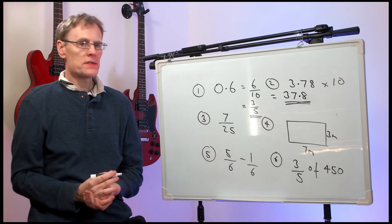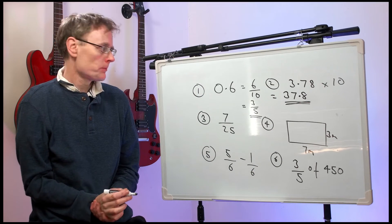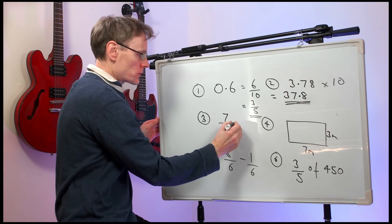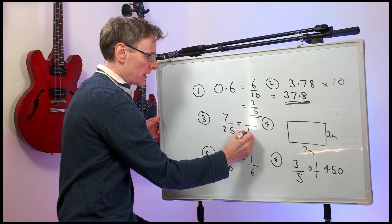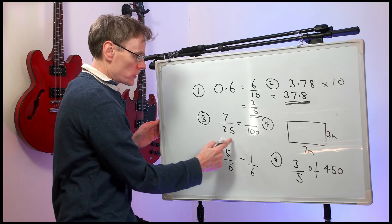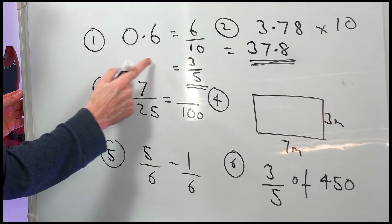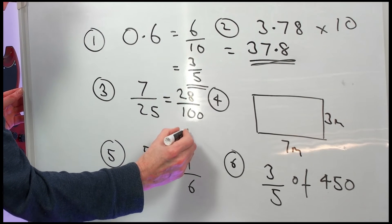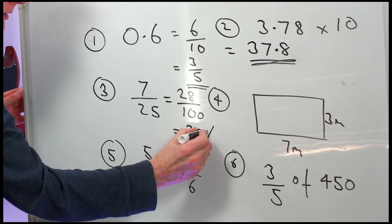Question three: You score seven out of 25 in a test, so what is that as a percentage? Well, seven out of 25 is something out of 100. Percent means out of 100. We've multiplied the bottom by four, we times the top by four. We get 28 out of 100, which is 28 percent.